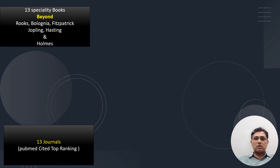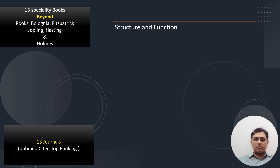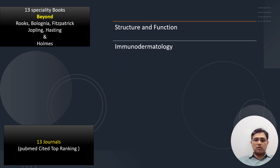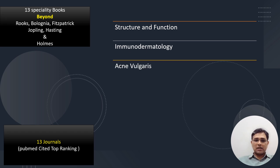We have added 13 journals. New chapters in this edition include structure and function of skin — a theory topic — and a very concise, diagram-rich chapter on immunodermatology, which is crucial because most therapeutics are now moving in that direction, whether JAK inhibitors or biological drugs.